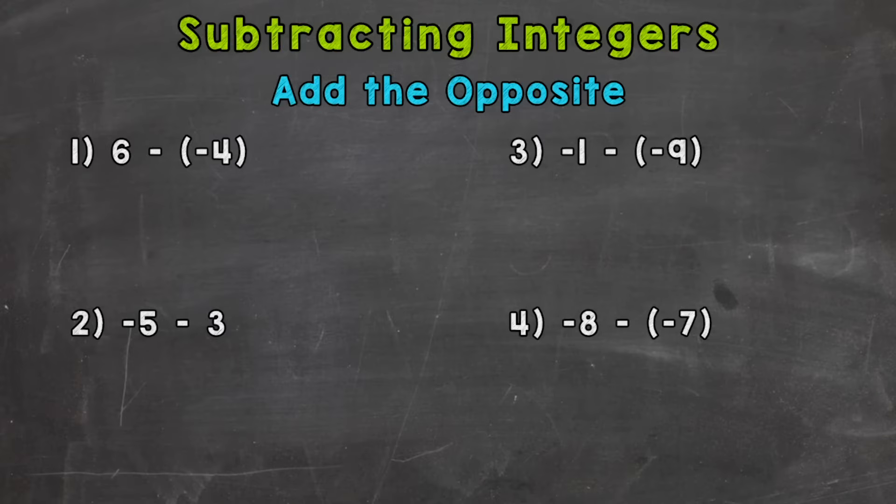Now when it comes to subtracting integers, we're actually going to add the opposite. And we have four examples here that we're going to go through together in order to get this down.